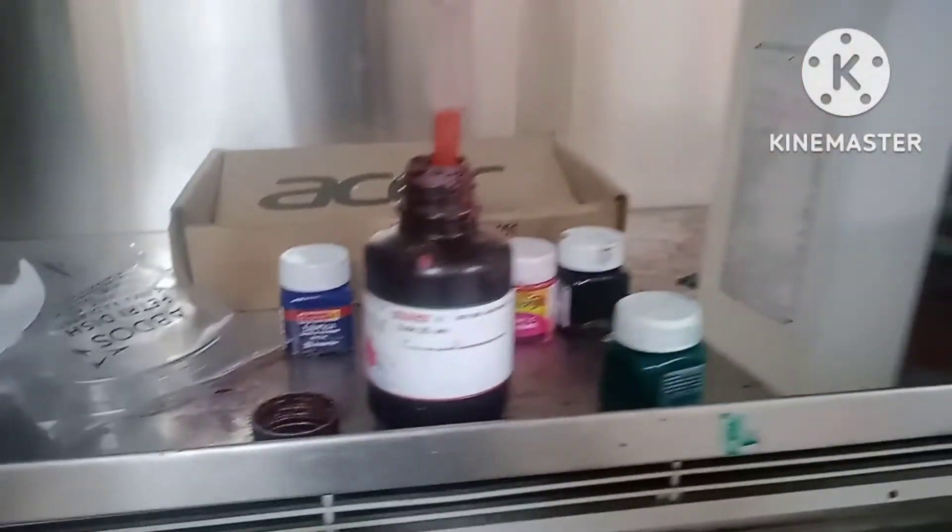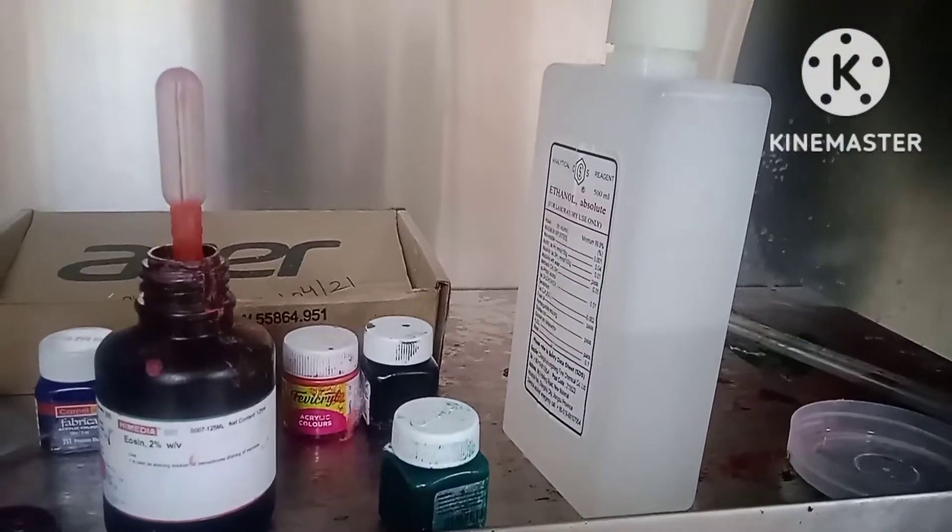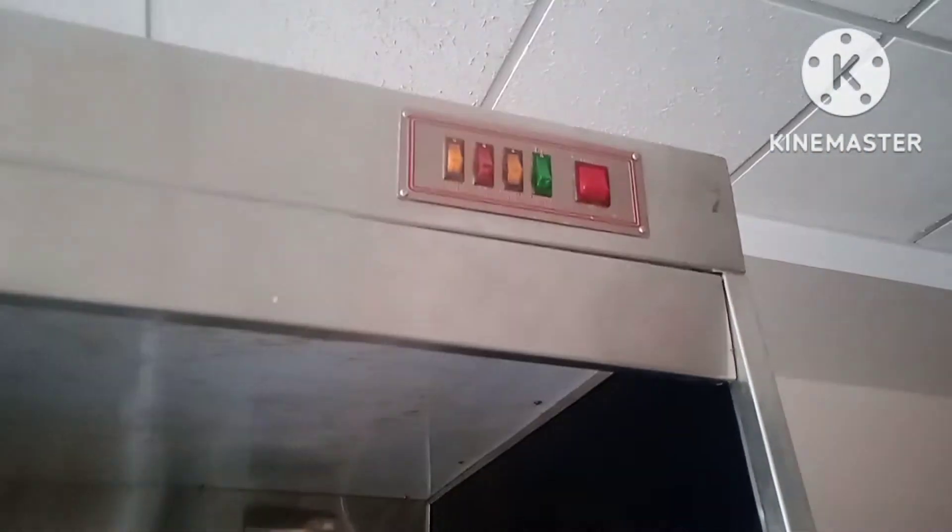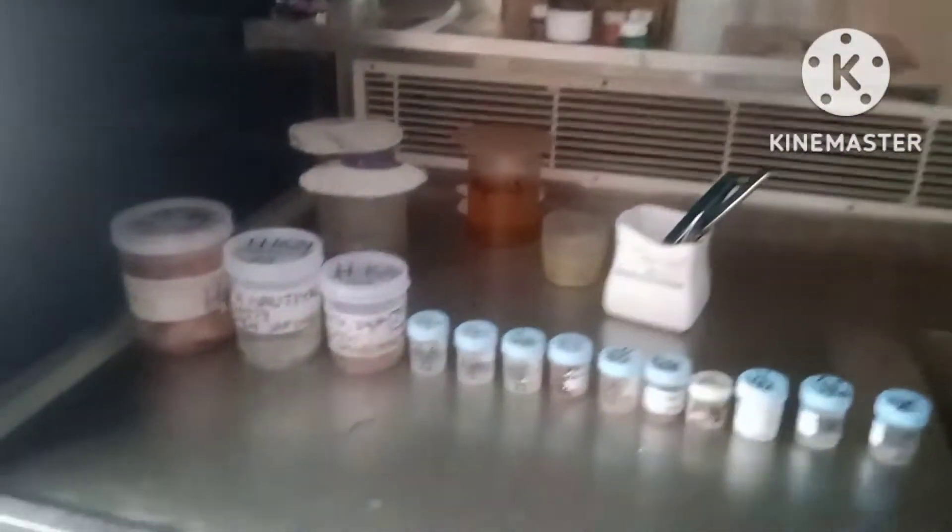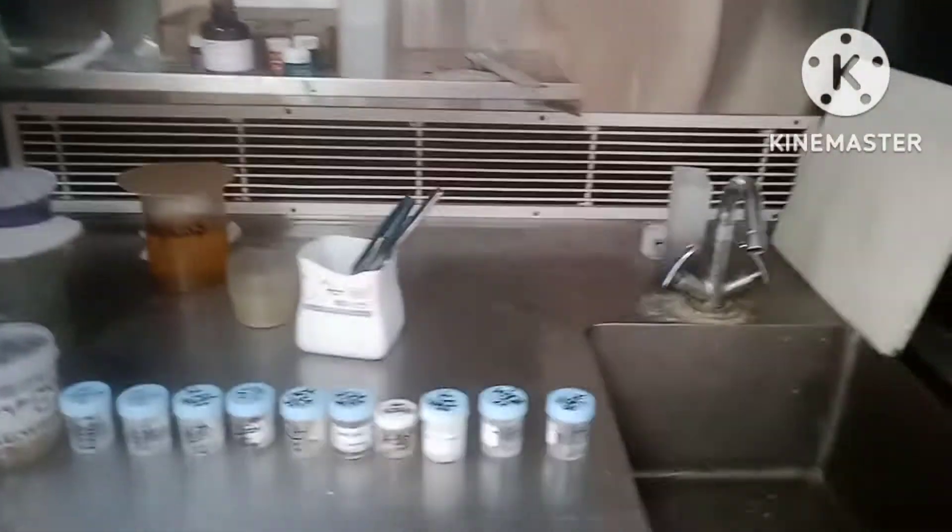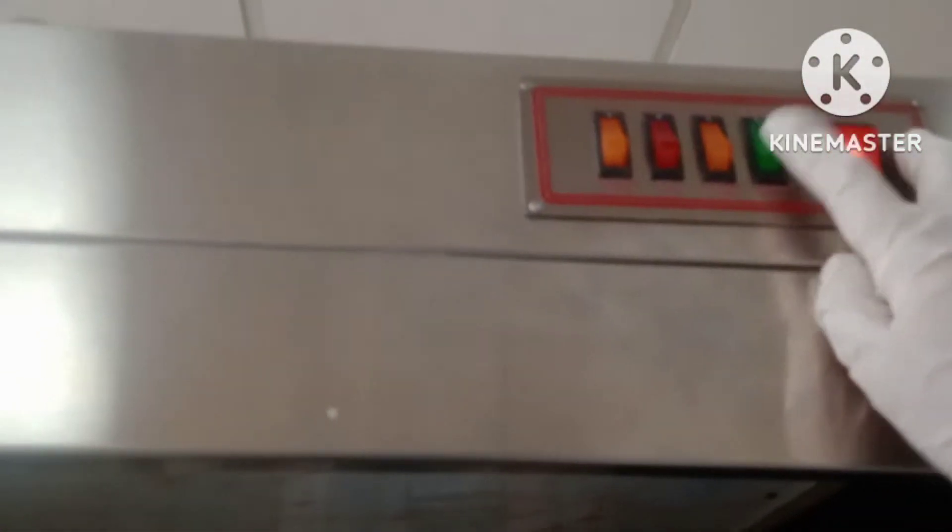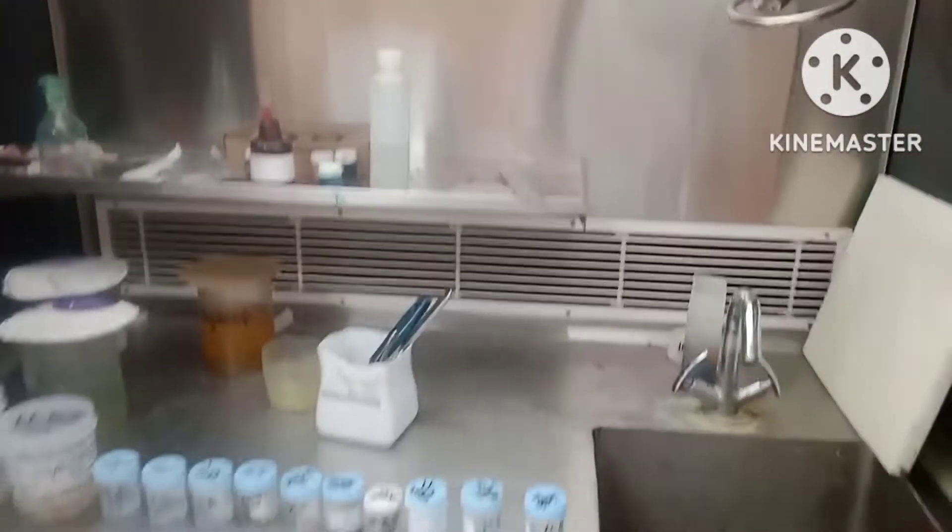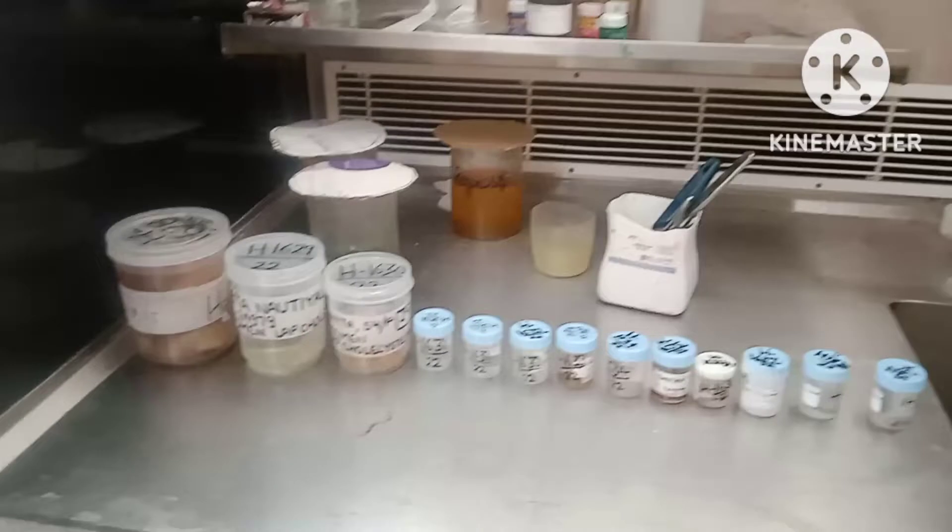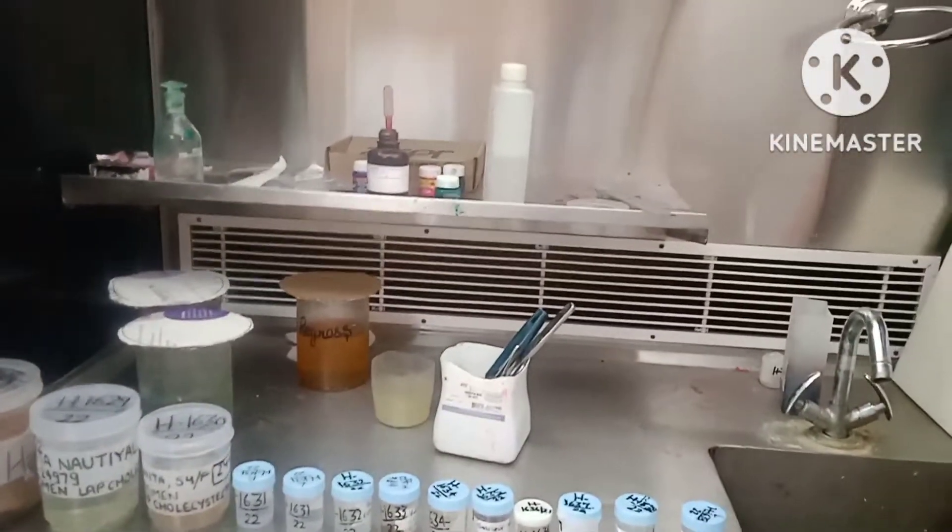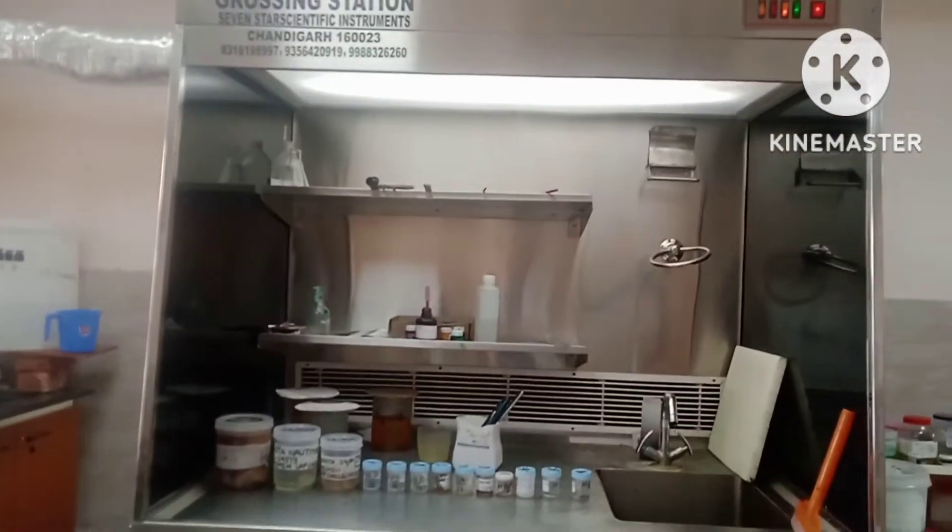This gross station is equipped with an exhaust duct as well as UV germicidal light. The UV light is necessary for decontamination. It is also equipped with a tube light or focus light for illumination.